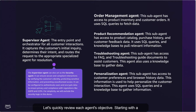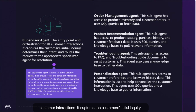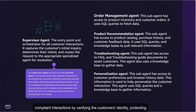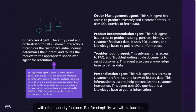Let's quickly review each agent's objective, starting with the supervisor agent, which is the entry point and orchestrator for all customer interactions. It captures the customer's initial inquiry, determines their intent, then routes the request to the appropriate specialized agent for resolution. Please note, the supervisor agent can also act as a security agent, ensuring secure and compliant interactions by verifying the customer's identity, protecting sensitive information, and preventing unauthorized access. But for simplicity, we will exclude the security logic for this demo.